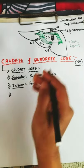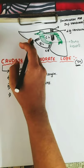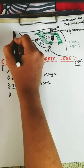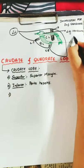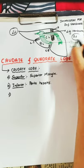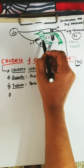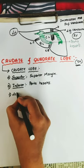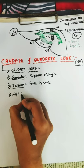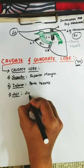Third one is the border on the left side. Remember this is the left side and this is the right side. On the left side, you can see there is the presence of ligamentum venosum.